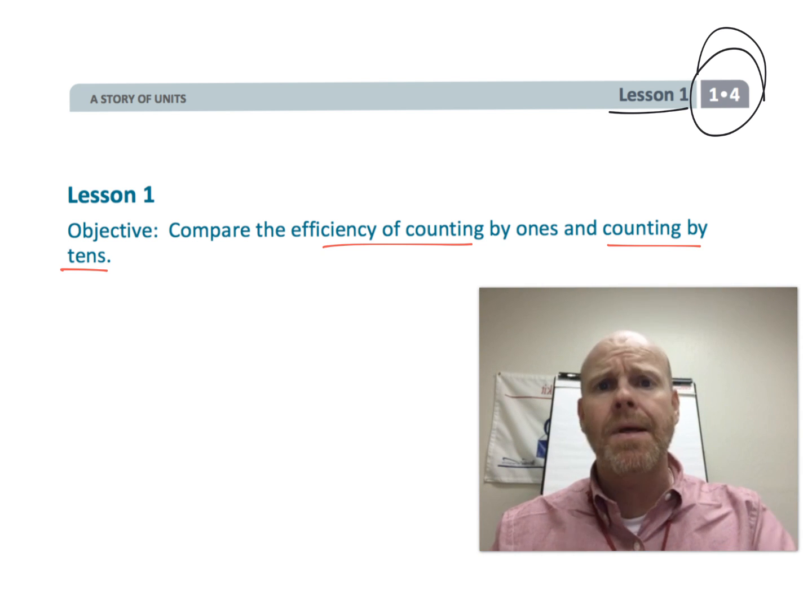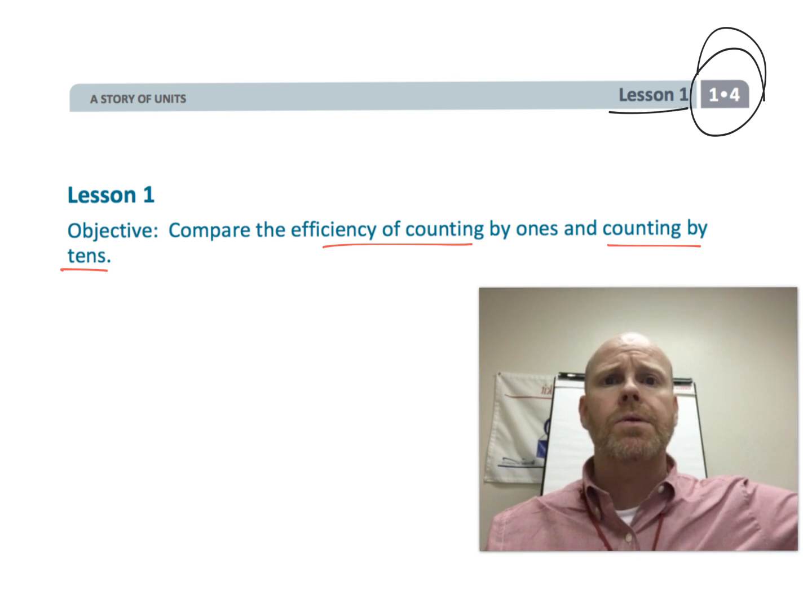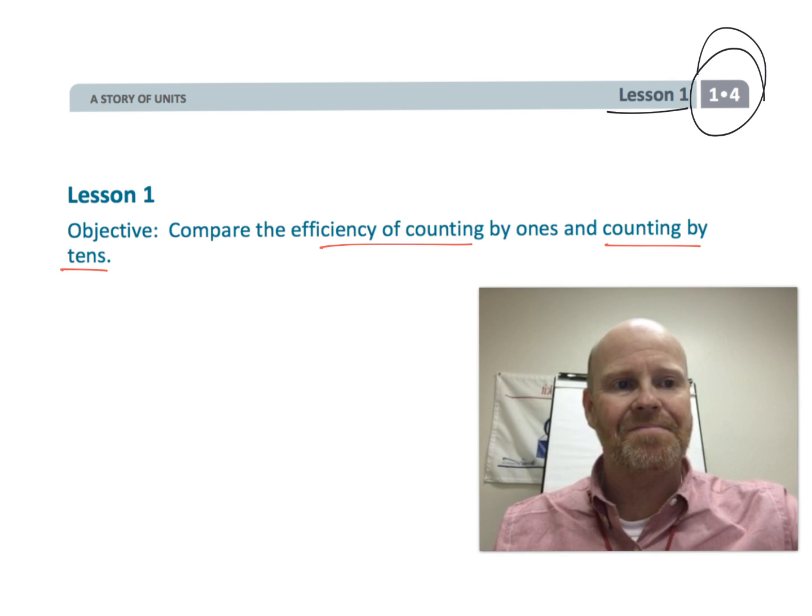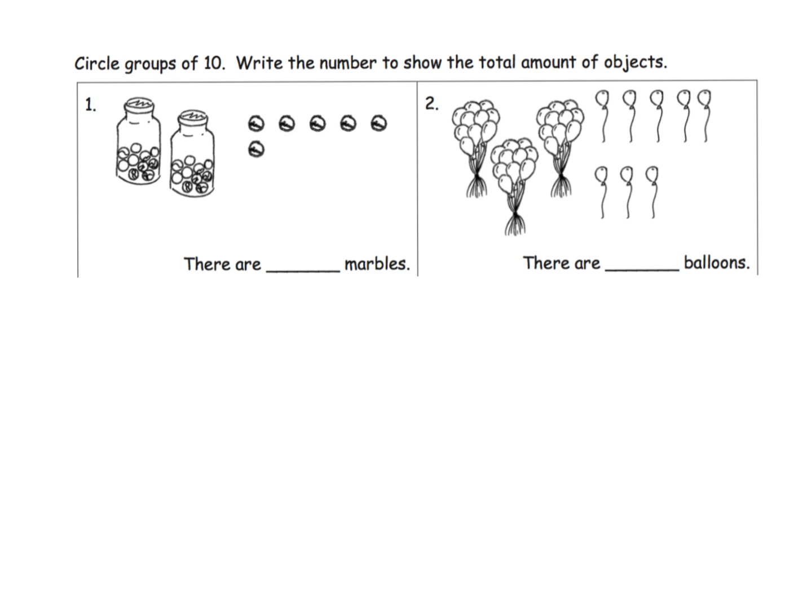All right, so what we're supposed to do is circle groups of 10 and write the number to show the total amount of objects. We've got all these marbles—we've got this glass jar with 10 marbles and then we've got this glass jar of 10 marbles.